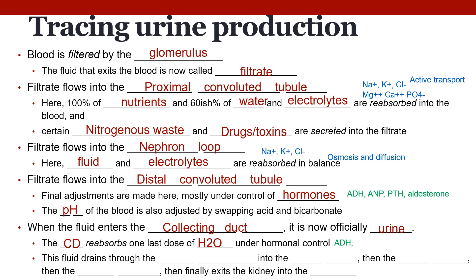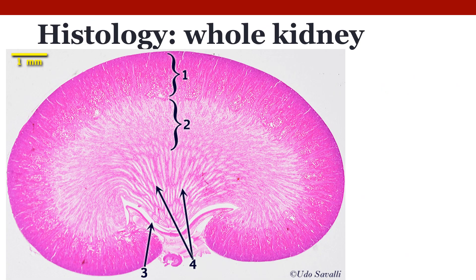From the collecting duct, fluid drains into the papillary duct, then the minor calyx, then to the major calyx, finally to the renal pelvis, and then exits the kidney through the ureter. This completes the tracing of urine production, and it is most useful to follow along looking at a nephron diagram.